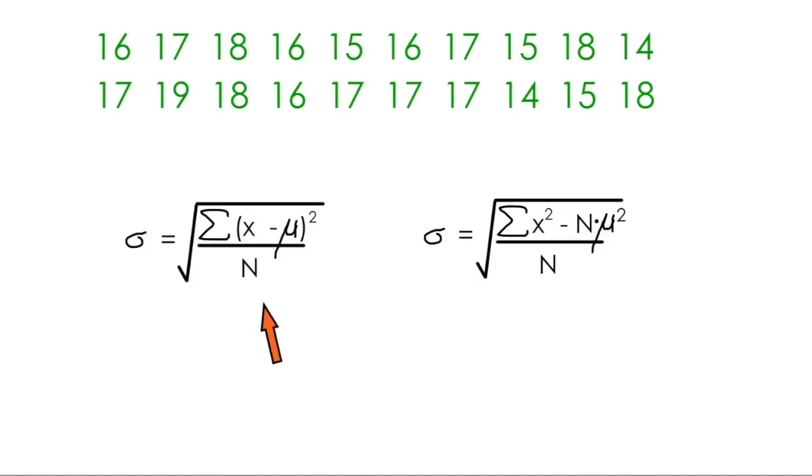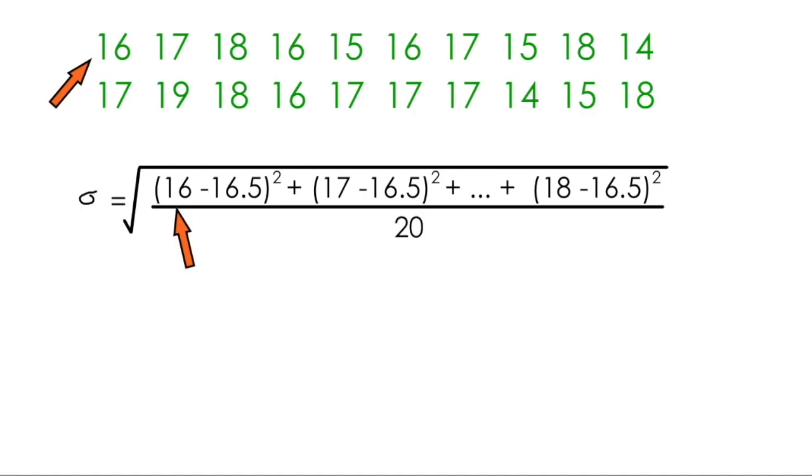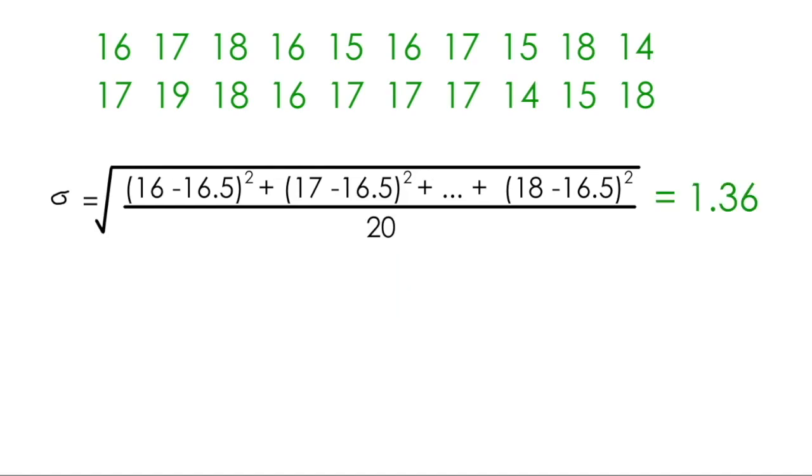I'll look at the first standard deviation formula first. To calculate standard deviation, we take each data value, we'll start with 16, we subtract the mean, and we square the result. We repeat this process for each data value in the set, adding the results together and dividing by the number of data values, in this case 20. Some careful calculator work will give me 1.36 as my standard deviation.